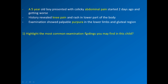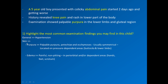Highlighting the most common examination findings: through general examination, we can find hypertension. On the skin, we can find purpura and edema. The purpura is usually symmetrical and located on pressure-dependent areas like the buttocks and lower limbs. Edema is usually painful, non-pitting, and found in periorbital or dependent regions like the hands, feet, and scrotum.